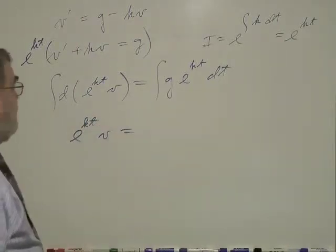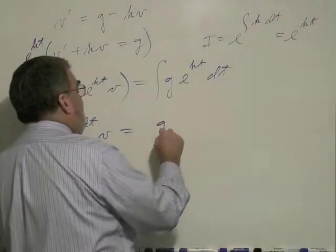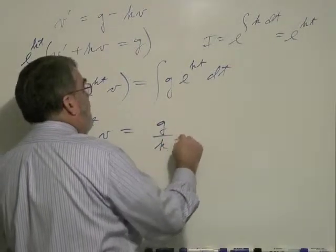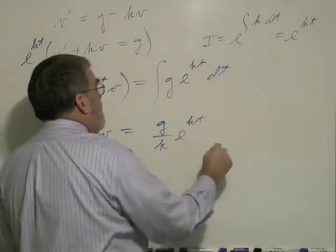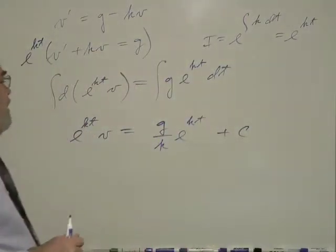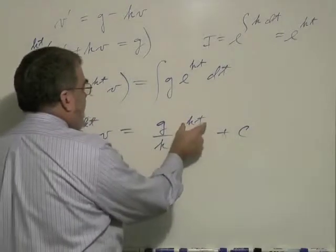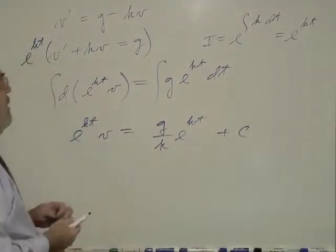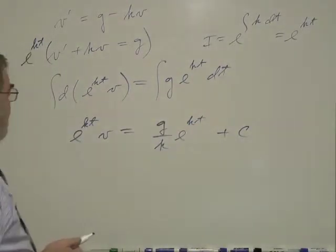So integrate this and all this disappears and leaves the e to the kt times v. On the right side, when we integrate this, we're going to get g over k e to the kt plus an additive constant. So you can verify that. Take this derivative, apply the chain rule, and the k's will cancel.